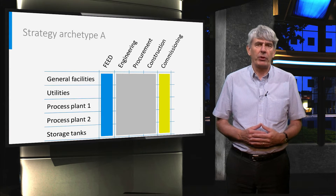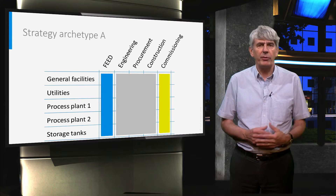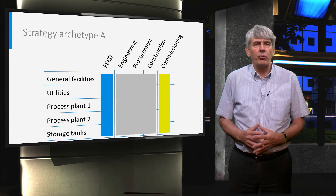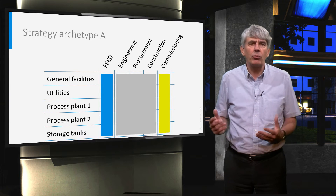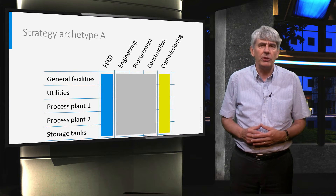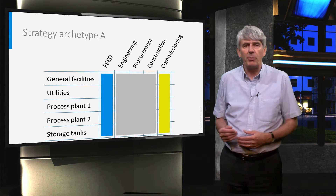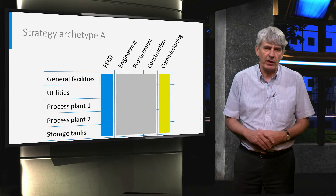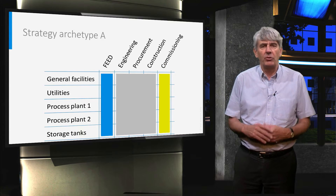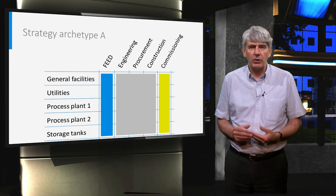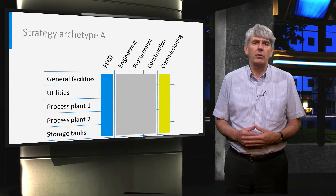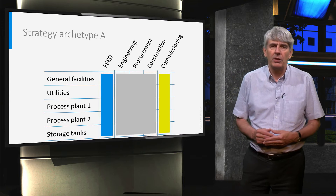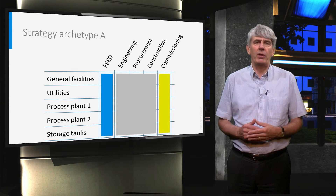For the development of a contracting strategy, the various project activities are listed horizontally. The contracting quilt of an archetypical contracting strategy, called Contract A, is depicted in the present slide, with a breakdown into five asset elements: general facilities, utilities, process plant 1, process plant 2, and storage tanks. The various blocks each represent a contract.